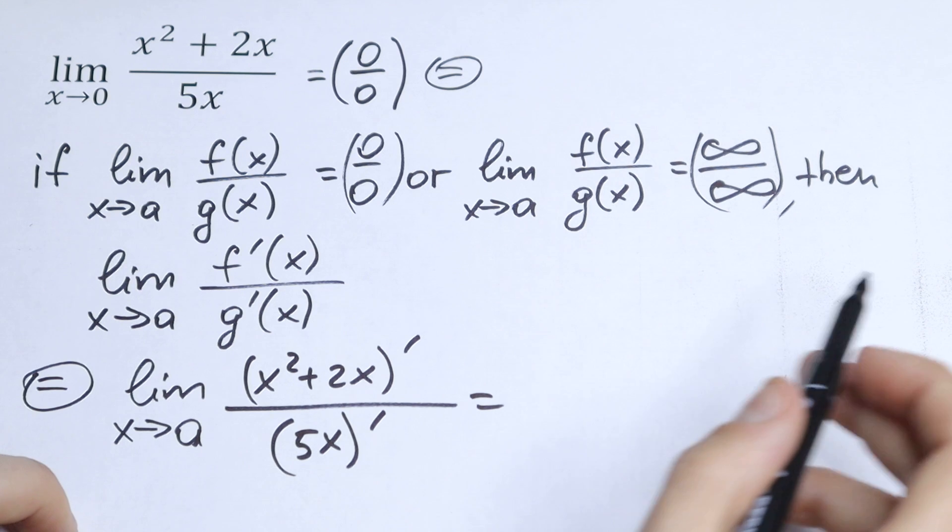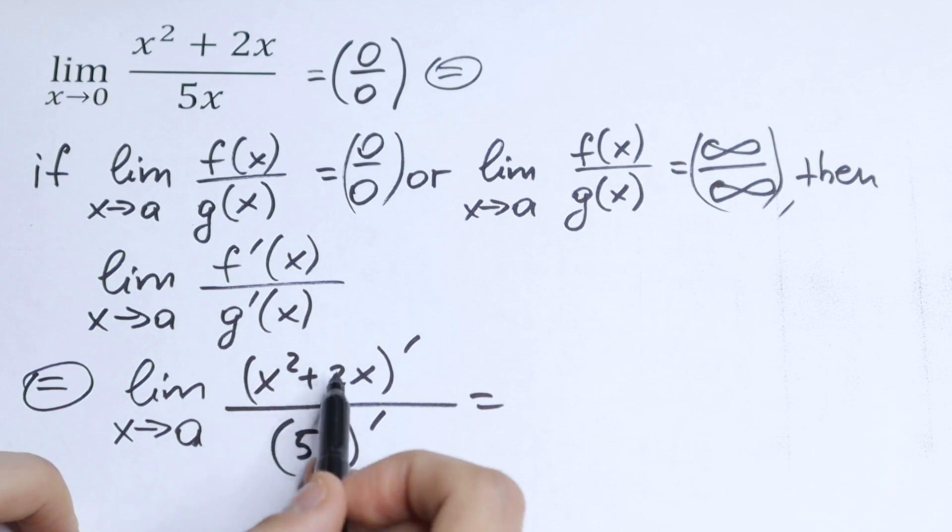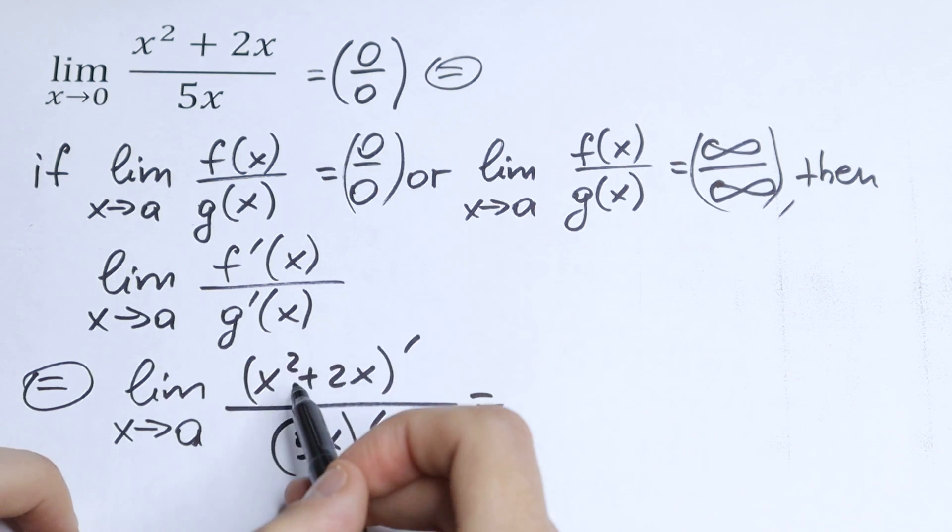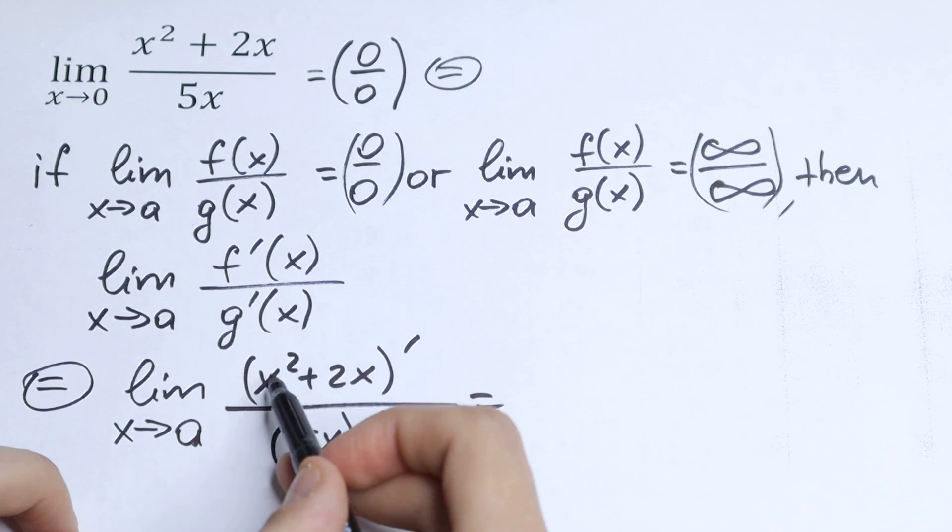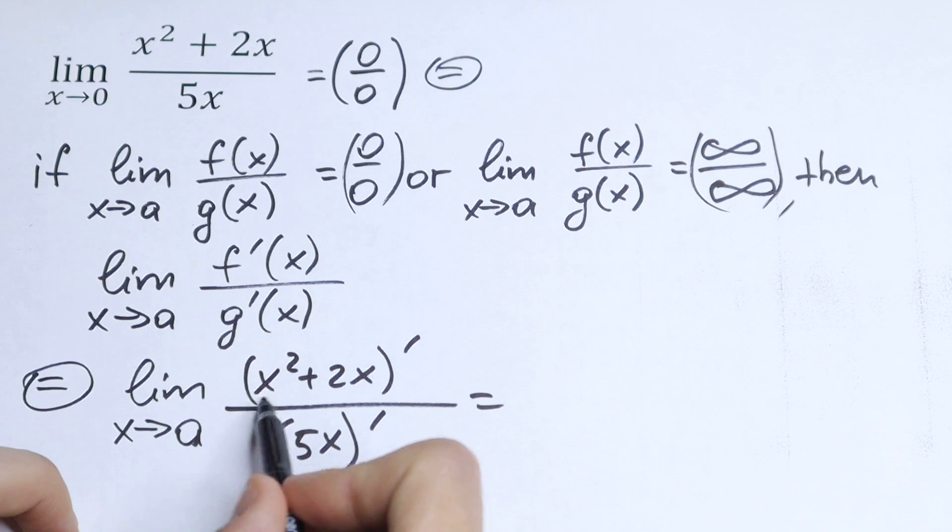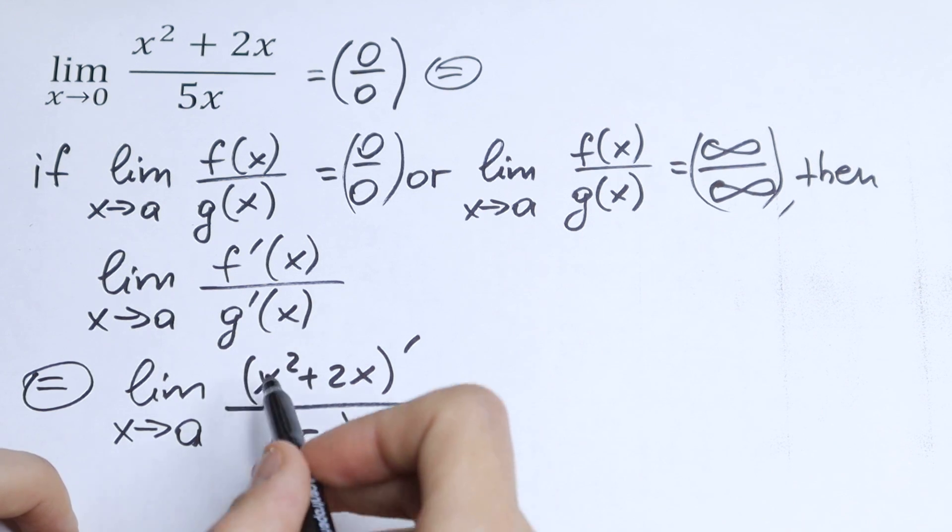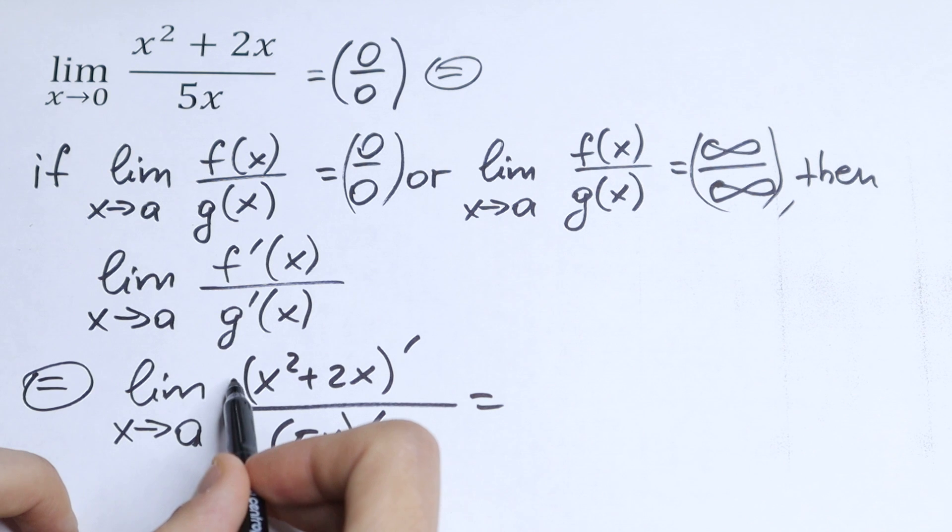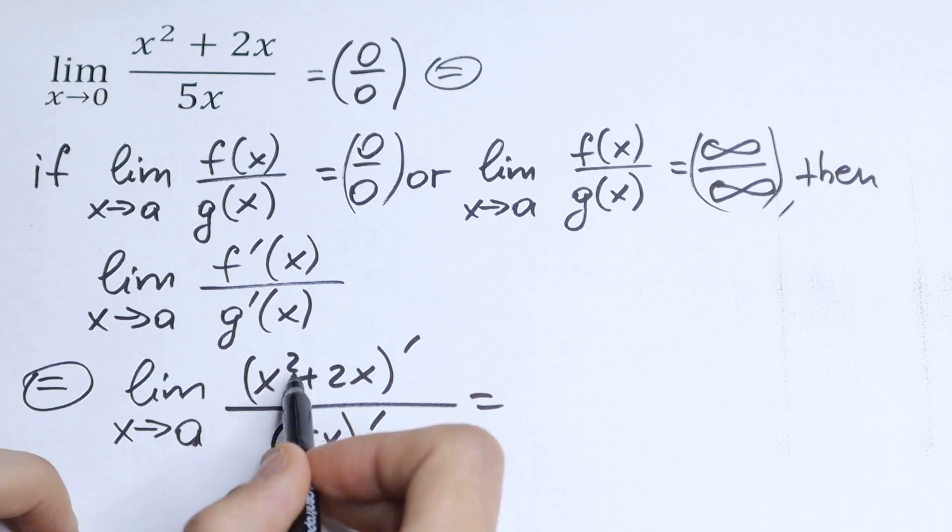the derivative of the sum of the function will be derivative of this function x squared plus this derivative 2x. This is the power rule right here, so two jumps right here, and right here we will have minus 1, so we'll have 2x.